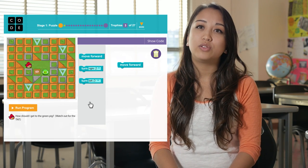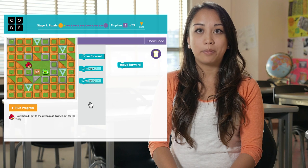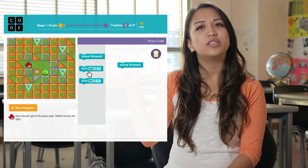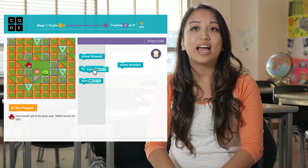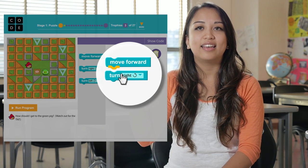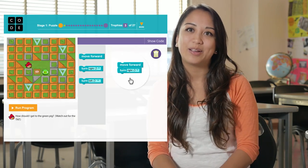And what if I want the bird to do something after moving forward one box? I can add another block to our program. I'm going to choose the turn right block and drag it underneath my move block until the yellow arrow appears, and then I'll drop it and the two blocks will snap together.